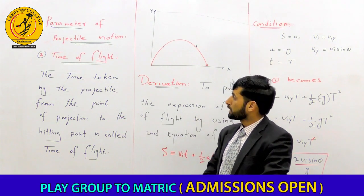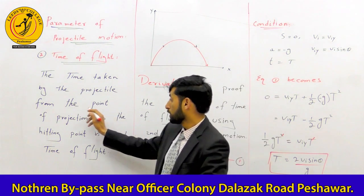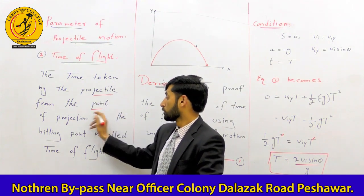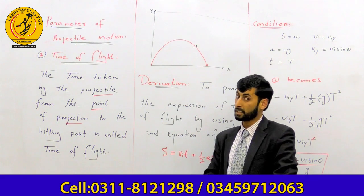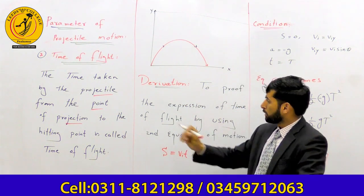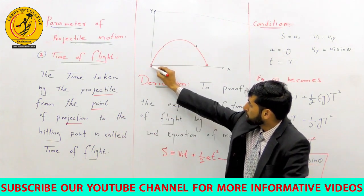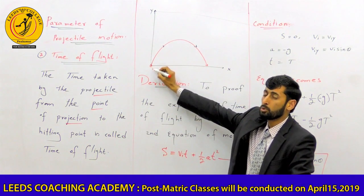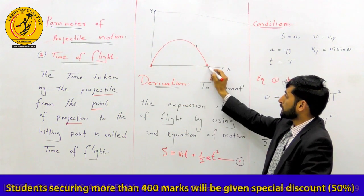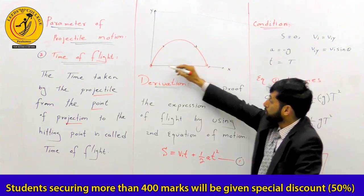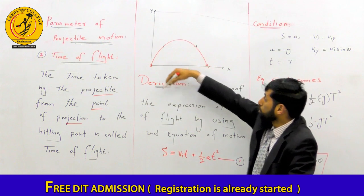The time taken by the projectile from the point of projection to the landing point is called the time of flight. From the point of projection to the heading point — the point where it hits the ground — that total time is the time of flight.